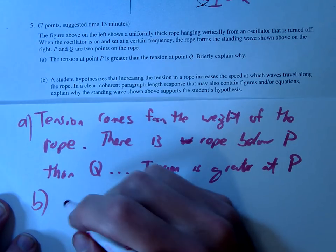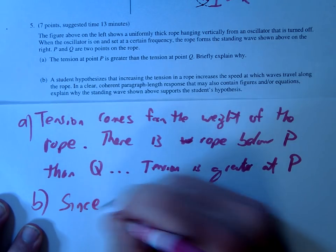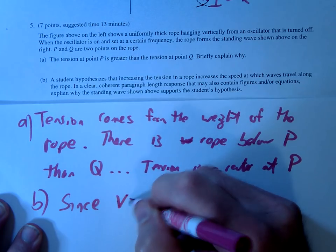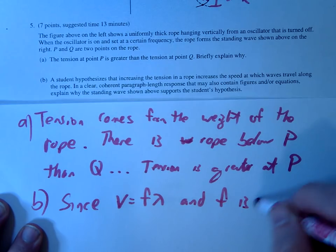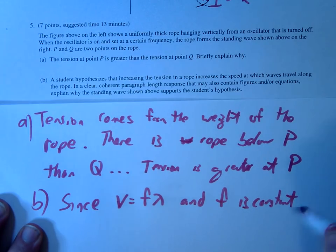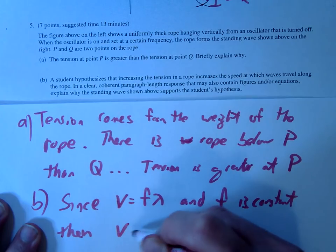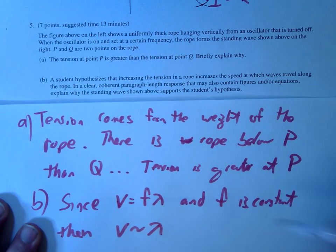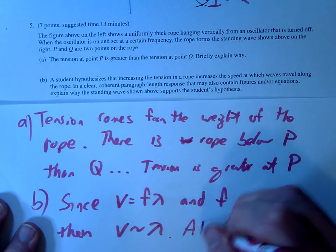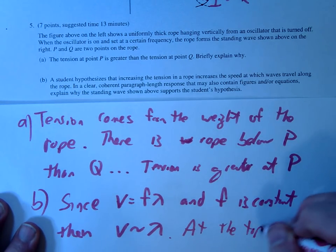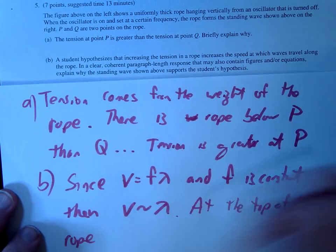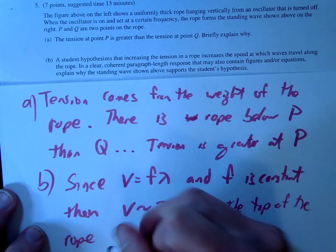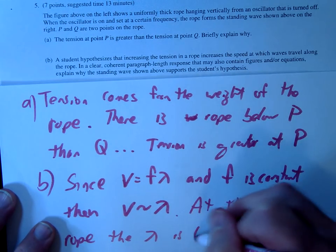Well, something like, since, let's write it like this. So since frequency, velocity is equal to frequency lambda, and frequency is constant, then V is essentially directly proportional to lambda. So we can look at that relationship. At the top of the rope, the wavelength is longer.